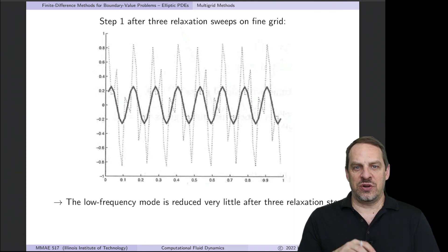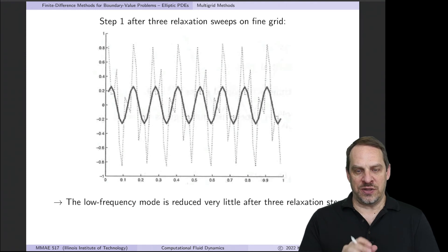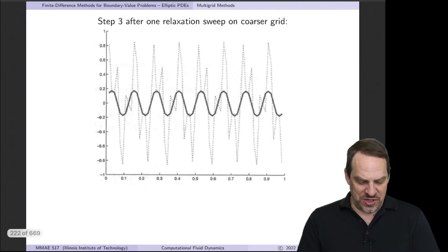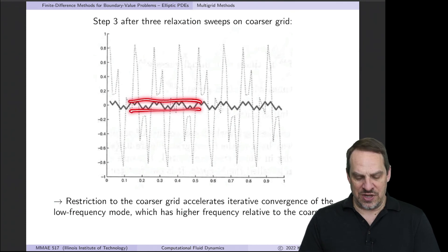So you can see there's a point of diminishing returns where there's not much value in continuing this iterative process on the fine grid. And it's better that we do the coarse grid correction in order to accelerate the convergence process. So at this stage we take our numerical solution, which of course is approximate, we get the residual, we restrict the residual to the coarse grid, and then we do step three on that coarse grid. Step three is to relax here one relaxation sweep on the coarse grid. You can see that's reduced the error somewhat. Two additional sweeps, so three total relaxation sweeps on the coarse grid, and you can see it's reduced the error quite a bit.